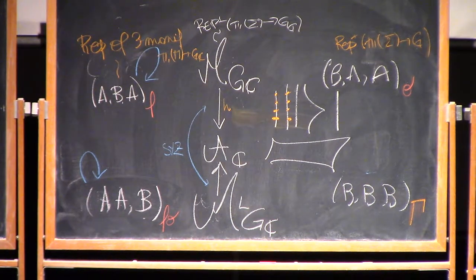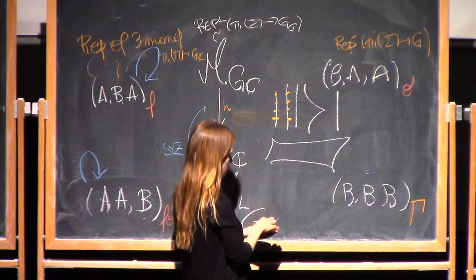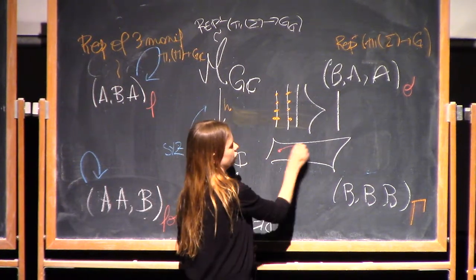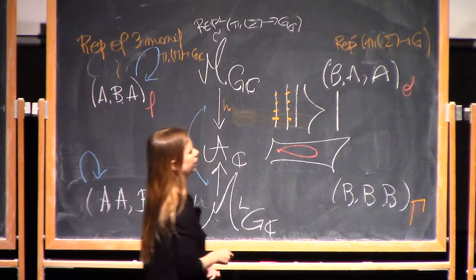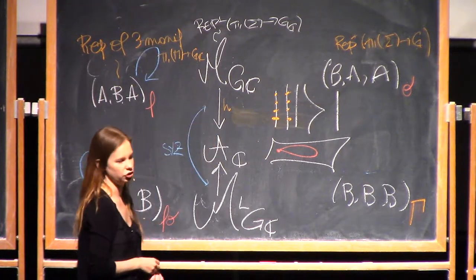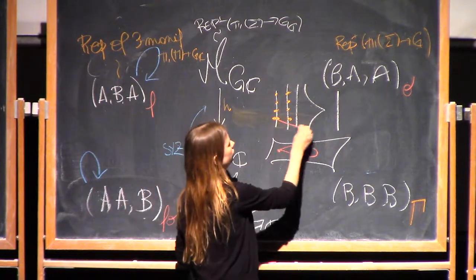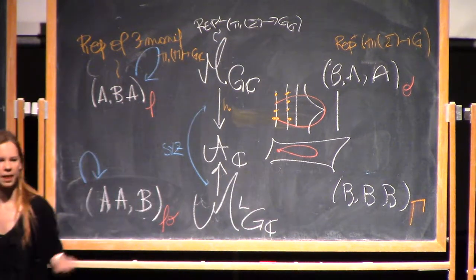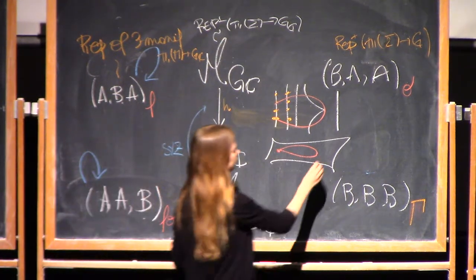One thing that you can ask is: if I take a loop in the base of the fibration — so I take a loop here in the base of the Hitchin fibration — what happens with the loop when I lift it? Where does it take my points? This is what's known as the monodromy action.